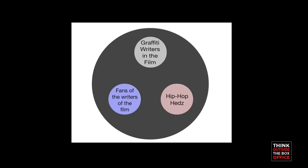So for instance, in Vomit, the three cores that we have: we have the graffiti writers in the film, we have hip hop heads, and then we have the fans of the writers in the film.